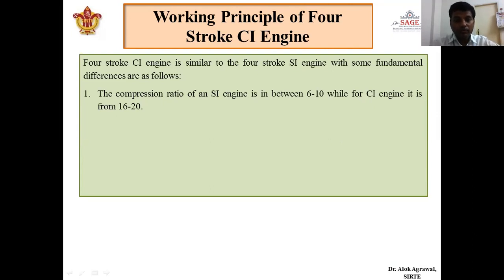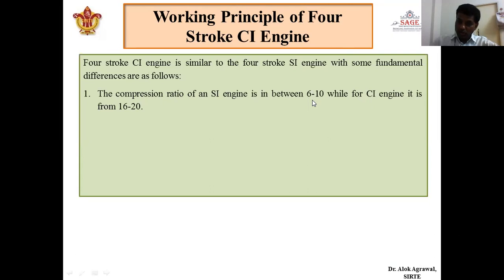The compression ratio is the ratio of total volume to clearance volume. When the compression ratio is low it means the total volume is low. So in the case of the SI engine the compression ratio is low, and it can be seen from this data that the size of the SI engine is less as compared to the size of the CI engine. This is the first basic difference between the two engines.